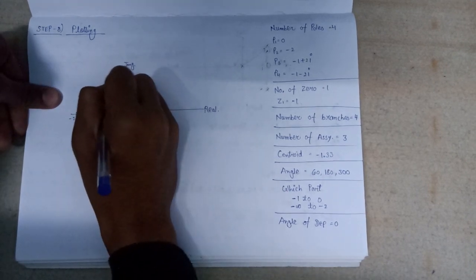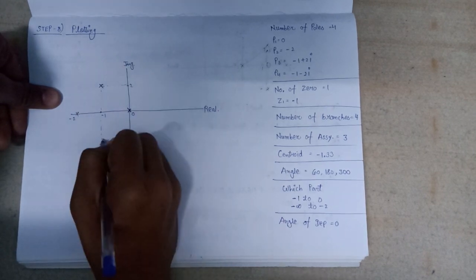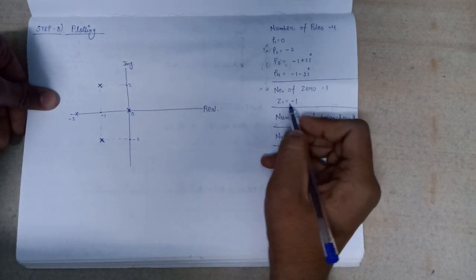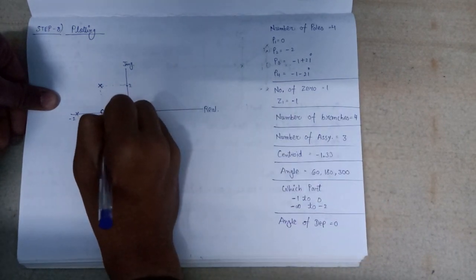So pole P3 lies here and pole P4 lies here, and we have Z1 that lies at minus 1.